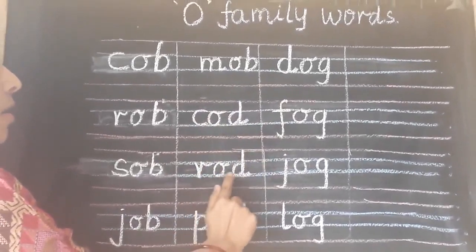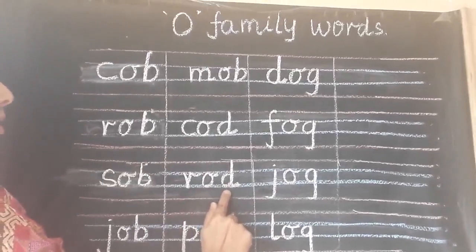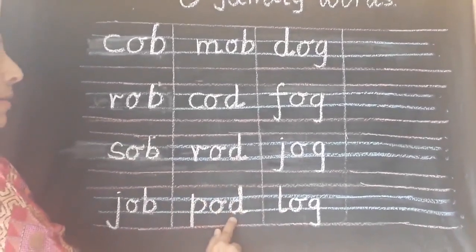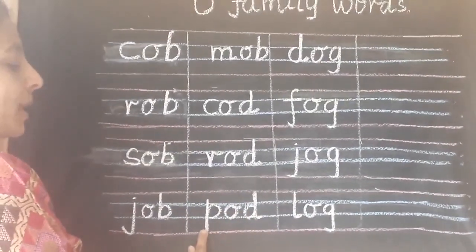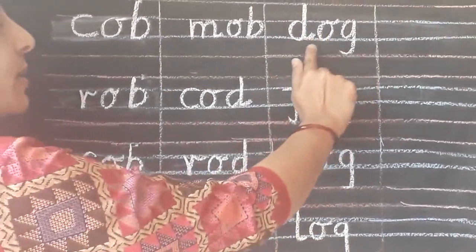R-OB, ROB. R-OB, ROB. P-OB, POB. P-OB, POB. P-OB, POB. Now OG words.